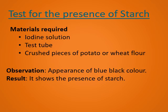Now let's test for the presence of starch in a given food sample. Materials required: iodine solution, a test tube, and crushed pieces of potato or wheat flour. Procedure: take a test tube and add the food sample — crushed pieces of potato or wheat flour — add some water, mix and shake the test tube well, then add a few drops of iodine solution. You will observe the food turns blue-black in color, which shows the presence of starch in the given food sample.